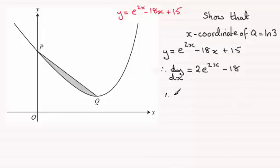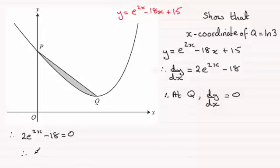So therefore we know that at Q, at Q that gradient given by dy/dx must equal 0. So therefore what we've got is 2e to the 2x minus 18 must equal 0. And if I rearrange this, add 18 to both sides, 2e to the 2x would equal 18, and then if I divide through by 2 I get e to the power 2x would equal 9.